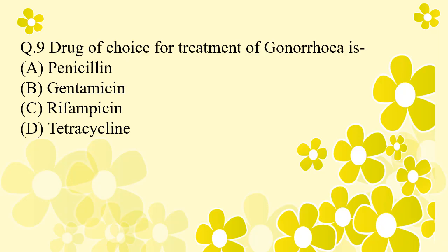Question 9: Drug of choice for treatment of gonorrhea — very important question. Option A: penicillin. Option B: gentamicin. Option C: rifampicin. Option D: tetracycline. The right answer is penicillin. Penicillin is the drug of choice for treatment of gonorrhea.